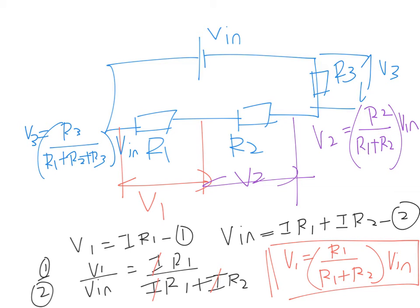You can use this formula as long as they are in series. Why? Because in the derivation of this formula, the current cancels — and this only happens if the current in all of them is the same. So you cannot use it if they are in parallel.